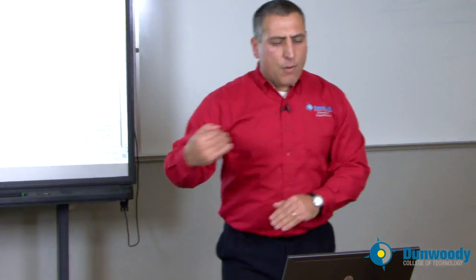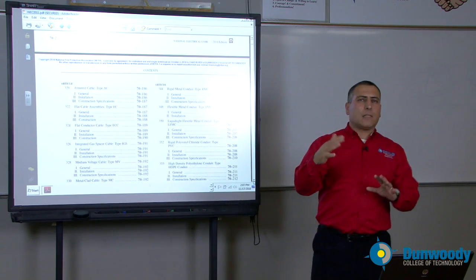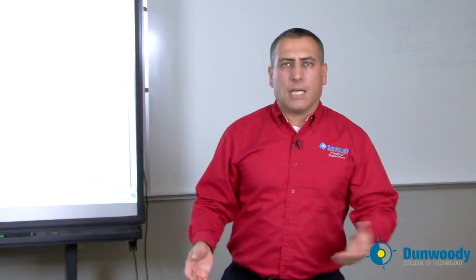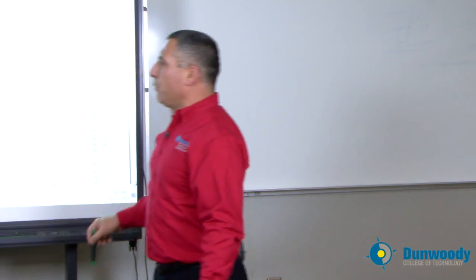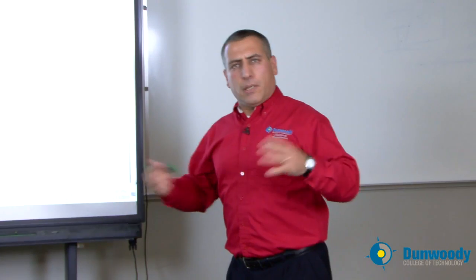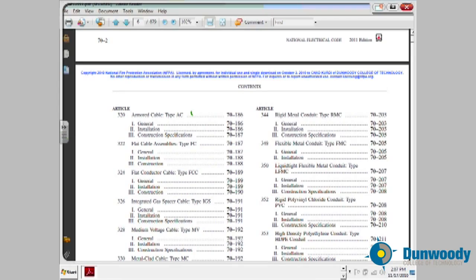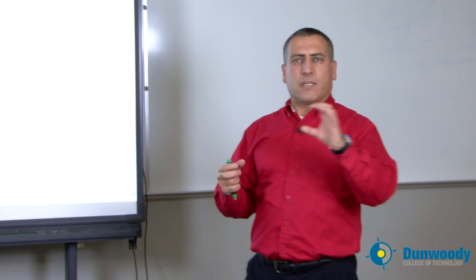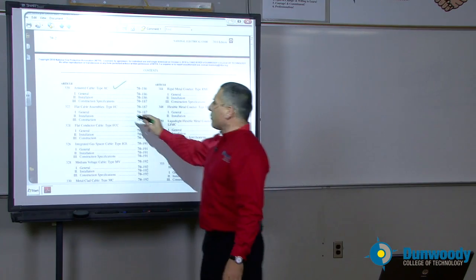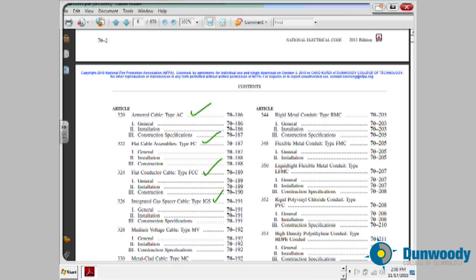From here on, you're going to find multiple articles that talk about special wiring methods — wiring methods such as cables and conduits. For example, if you are to use an AC cable, you're going to find all the information: where can you use an AC cable, what's the largest size, how do you staple an AC cable. All this information is found in these articles, such as AC cable article 320.